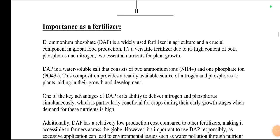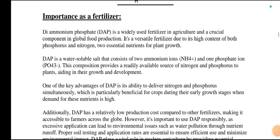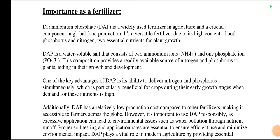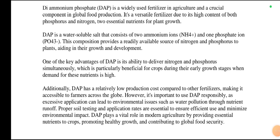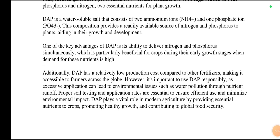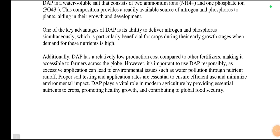Diammonium phosphate is a widely used fertilizer in agriculture and a crucial component in global food production. It is a versatile fertilizer due to its high content of both phosphorus and nitrogen — two essential nutrients for plant growth. It is a water-soluble salt consisting of two ammonium ions (NH4+) and one phosphate ion (PO4 3-). This composition provides a readily available source of nitrogen and phosphorus to plants, aiding in their growth and development. One key advantage is its ability to deliver both nutrients simultaneously, which is particularly beneficial for crops during early growth stages when demand for these nutrients is high.